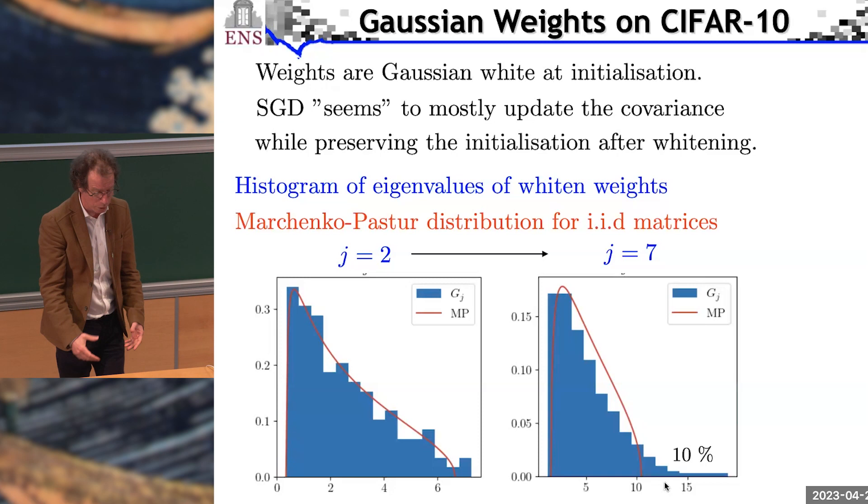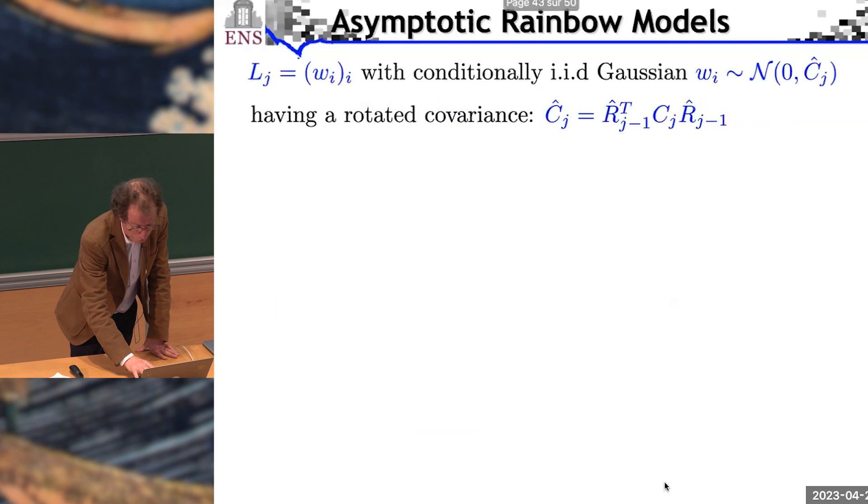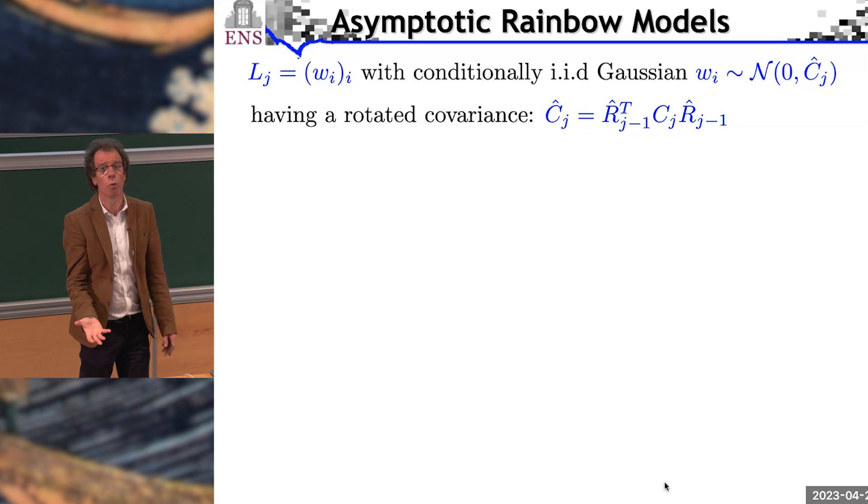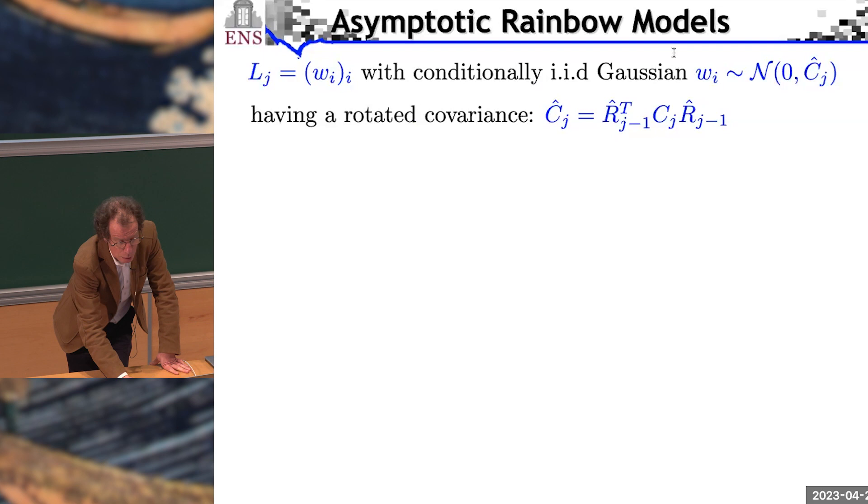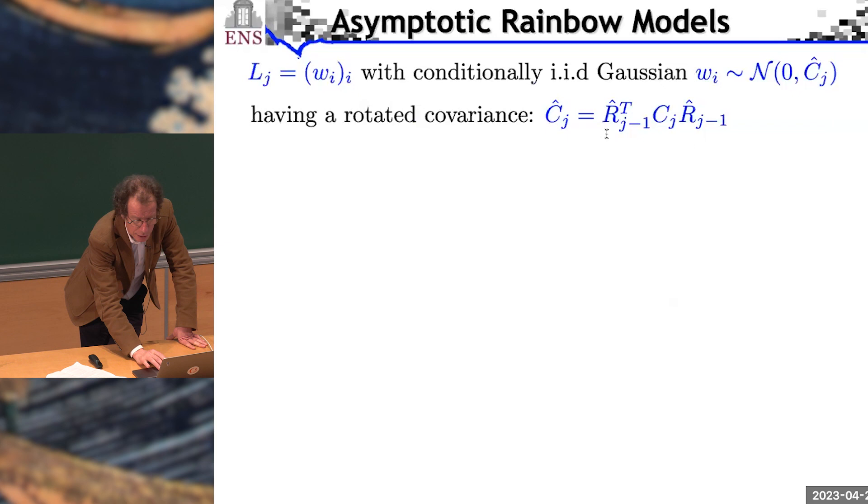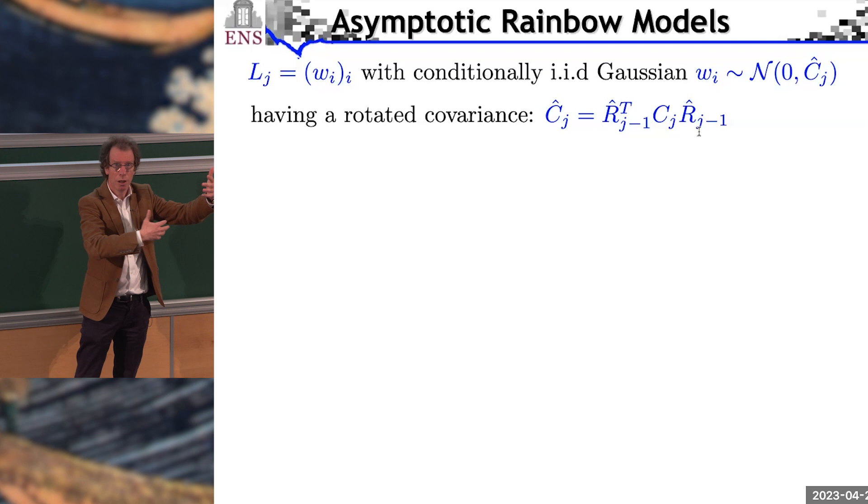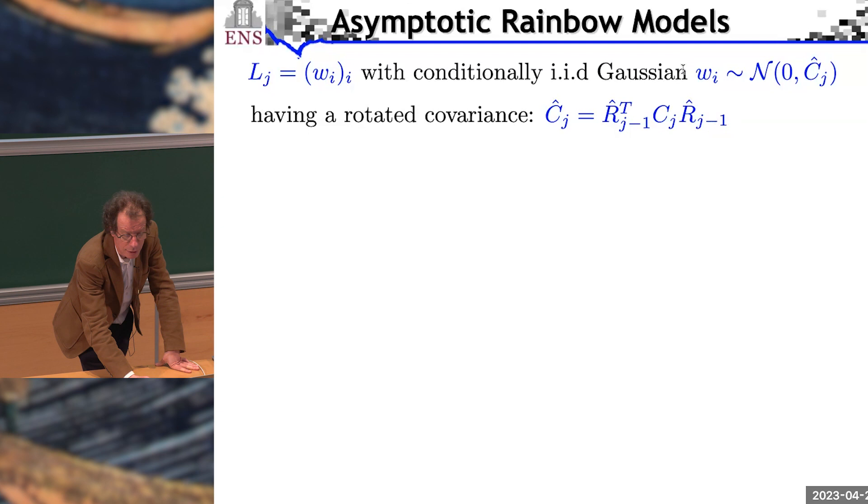The mathematical model now is the following. Each layer, the weights are Gaussian random variable. Each line of the matrix is independent, but they are conditionally Gaussian. Why? Because the covariance matrix is a rotated covariance. You have the fixed covariance and the rotation is due to the previous layer. The previous layer have been rotated, so they rotate the next layer. So, the only thing which is random here is the fact, of course, that it's a Gaussian random variable and the covariance has a dependency upon the previous layer through these rotations.